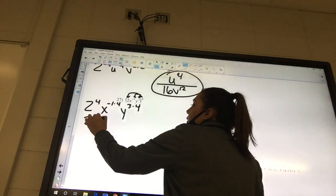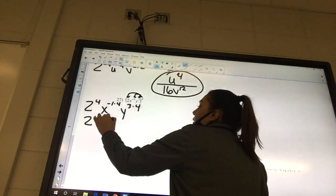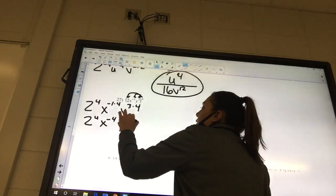Okay, so I'm going to have 2 to the 4th, x to the negative 4, y to the 12th.